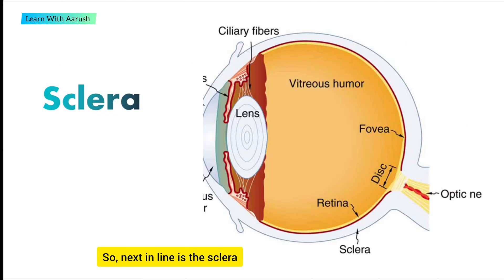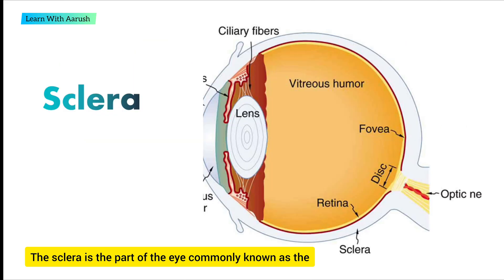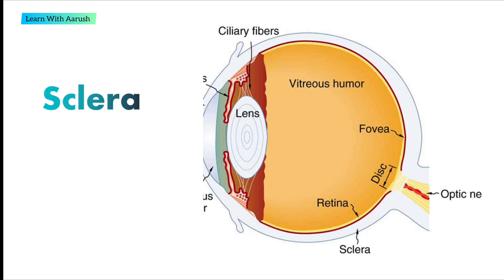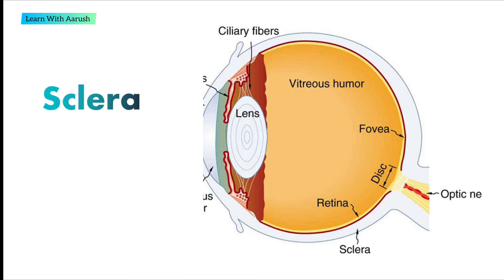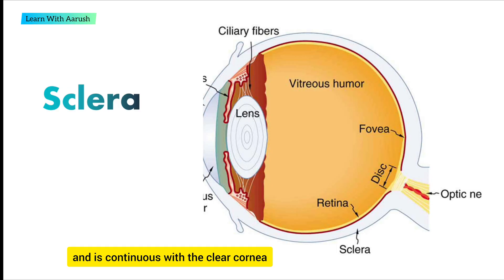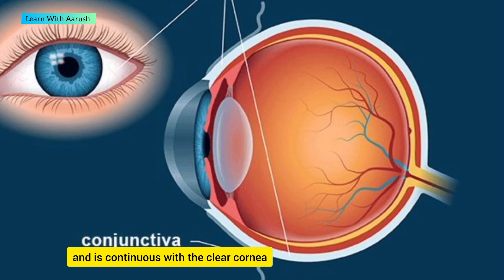Next in line is the sclera. The sclera is the part of the eye commonly known as the white part. It forms the supporting wall of the eyeball and is continuous with the clear cornea.